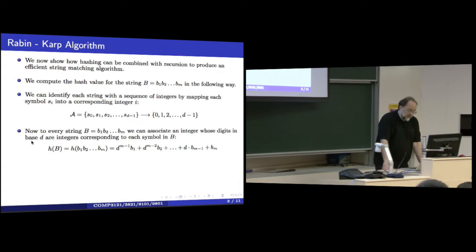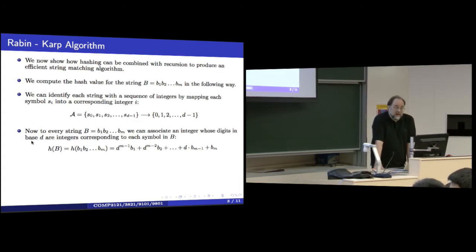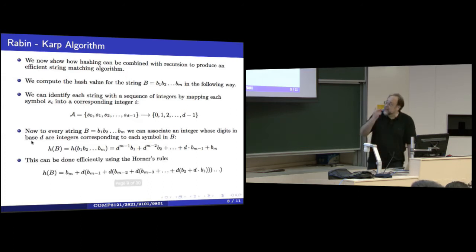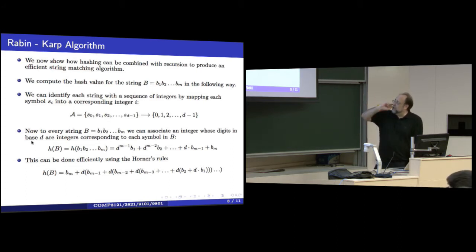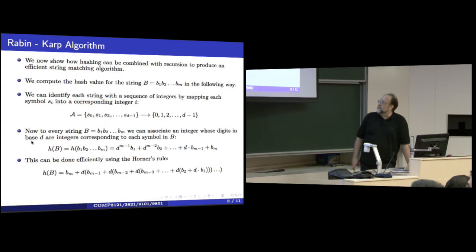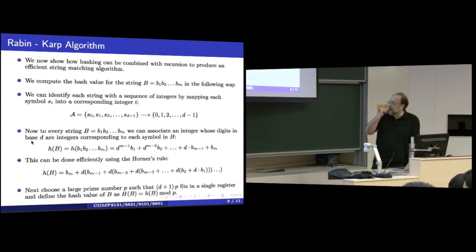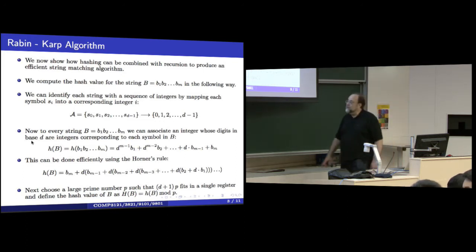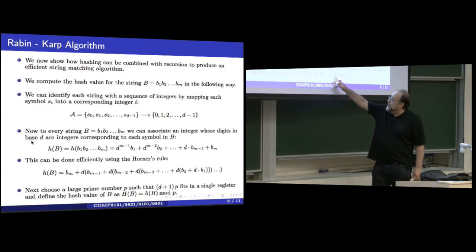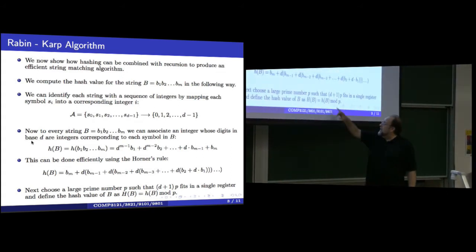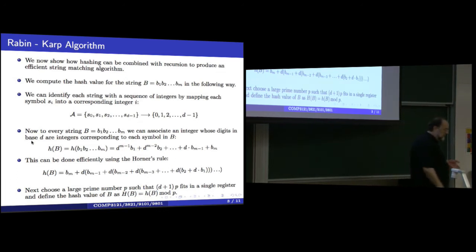Now, this number — if the sequence is long — can be very large and cannot sit in a single register. So what we do is define a hash value. We know how to deal with polynomials and can compute this efficiently using Horner's rule to reduce the number of multiplications. We define the hash value h(b) to be simply this number mod p.